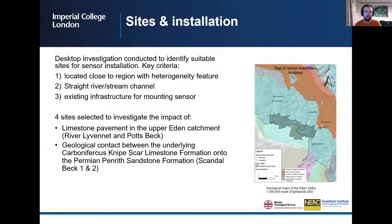Four sites were selected to investigate the impact: two for the limestone pavement in the upper Eden catchment that straddles the boundary with the adjacent Lune catchment, and two for the geological contact between the underlying Carboniferous Limestone formation and the Penrith Sandstone formation.